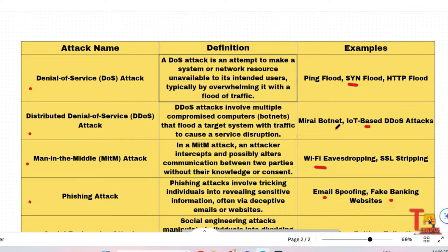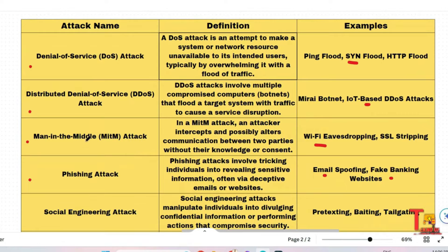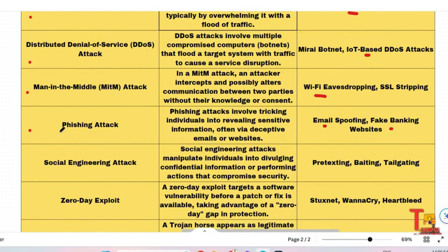The MITM attack — Man in the Middle — is where an attacker intercepts and possibly alters communication between two parties without their knowledge or consent. Many Wi-Fi related attacks happen here. The phishing attack is one of the most important attacks. It involves tricking individuals into revealing sensitive information, often via deceptive emails or websites. Examples include email spoofing and fake banking websites.